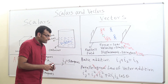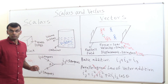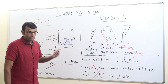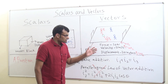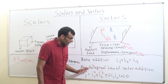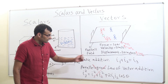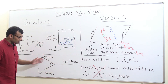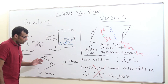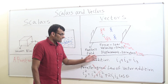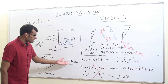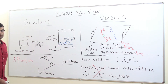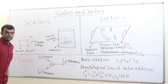Current cannot be called a vector because it does not obey the parallelogram law of vector addition. Force, velocity, and displacement obey the parallelogram law, but current through wires obeys basic addition — I1 + I2 = I3, here giving 5 amperes. I hope the concept is clear, and in the coming videos we will be explaining everything in detail.